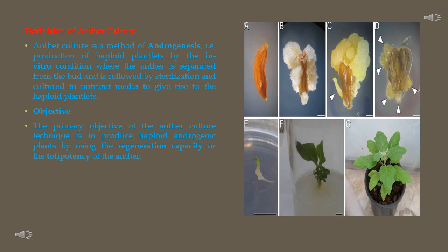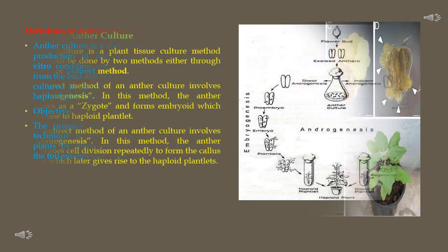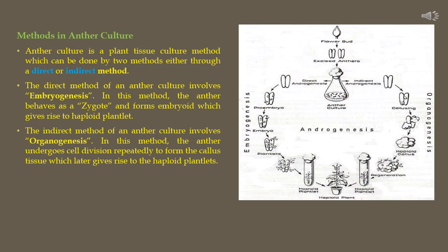The primary objective of the anther culture technique is to produce haploid androgenic plants by using the regeneration capacity, or totipotency, of the anther. This means that the capacity of cell division in the anther should be verified before it is taken for the anther culture process.